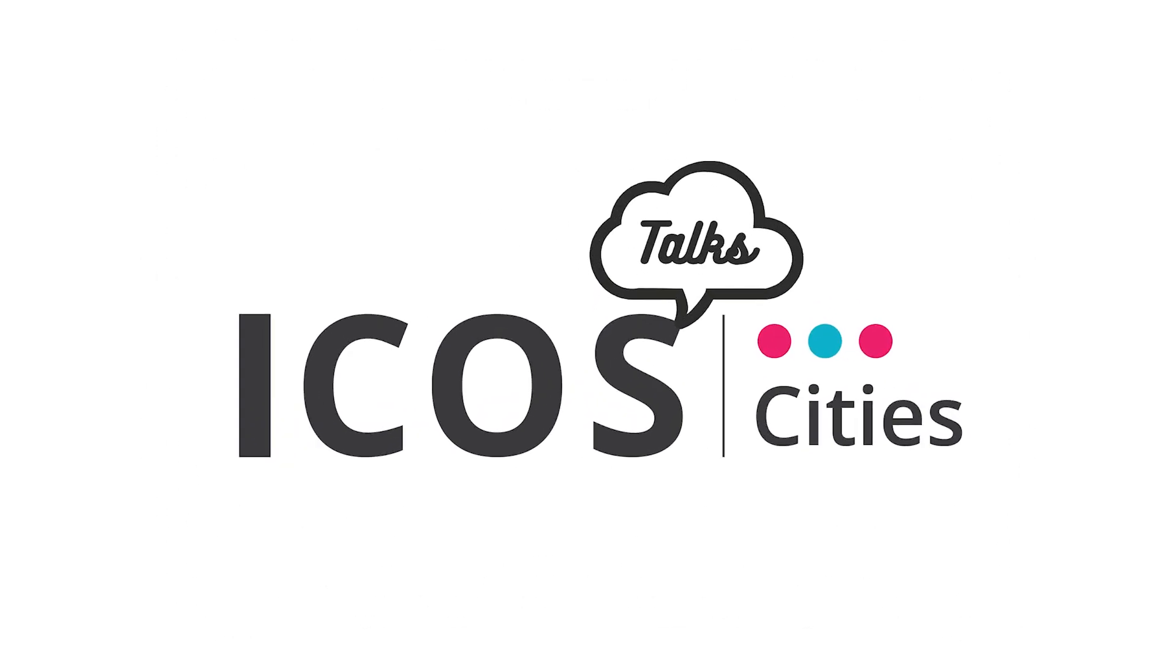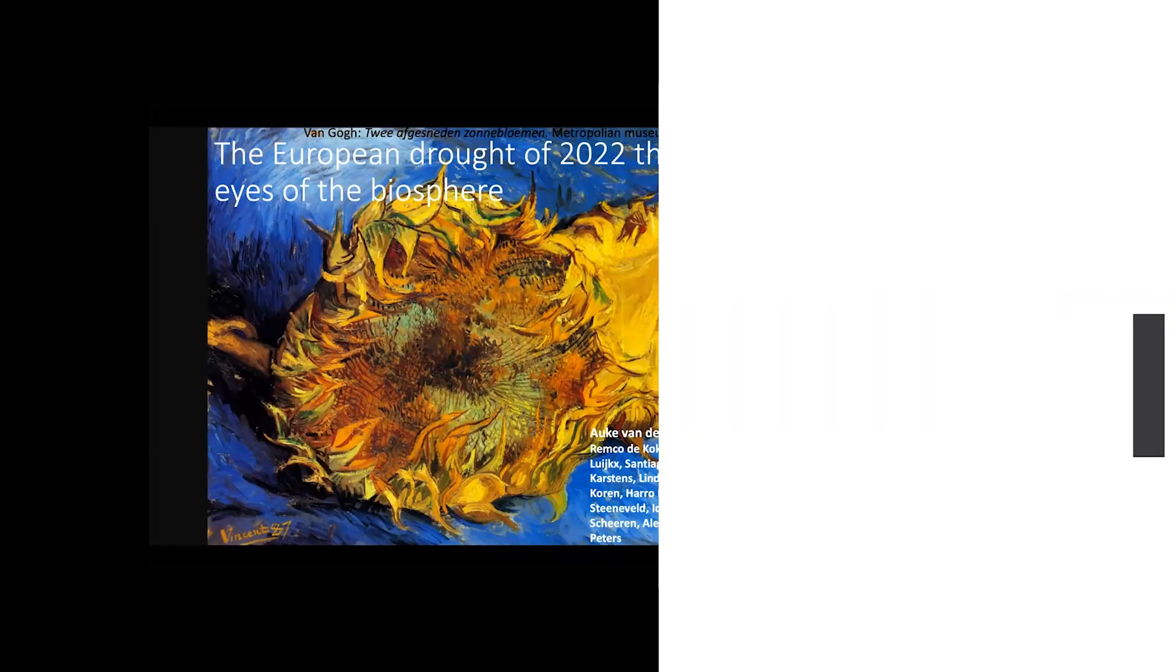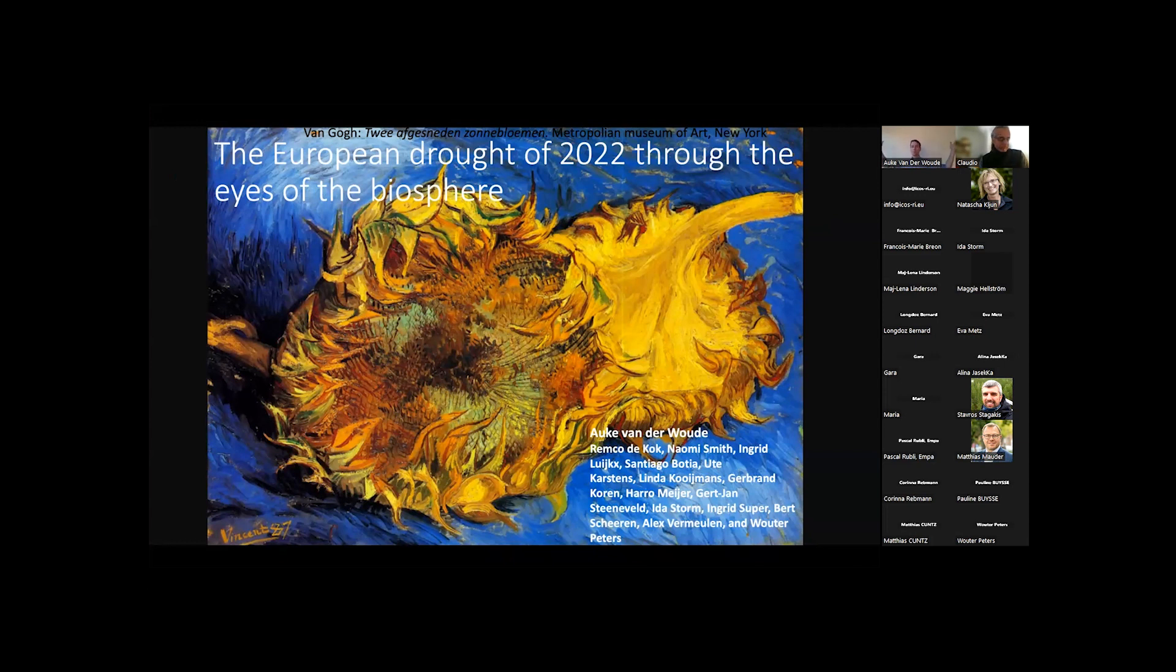So I think you all know what a sunflower is supposed to look like, right? There are these beautiful, open, tall flowers, very bright yellow. But sometimes when they're void of water, they can also look like the painting I show you here. This is a Van Gogh painting, and he painted two cut-off sunflowers. And as you can see, they are not these beautiful open flowers anymore.